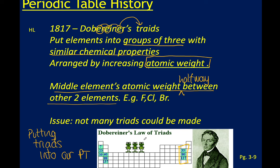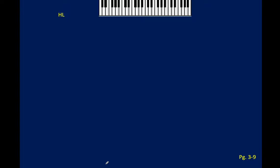This diagram shows Döbereiner's triads overlaid on top of our periodic table. In terms of the description written here, he is absolutely correct — they are in groups with similar chemical properties. He didn't know that then, but he was on the right track.